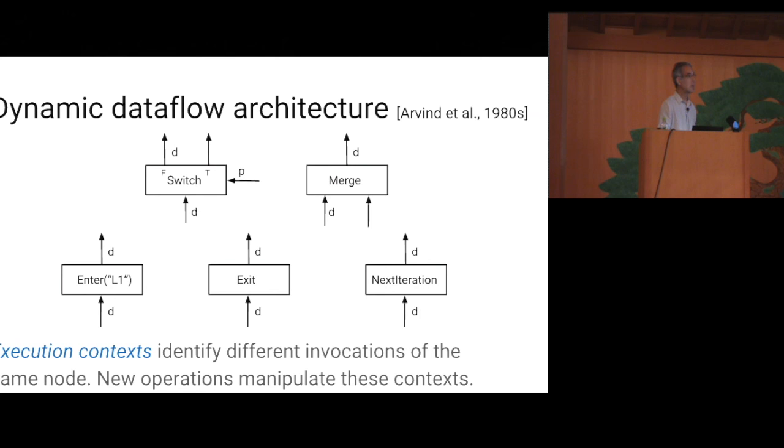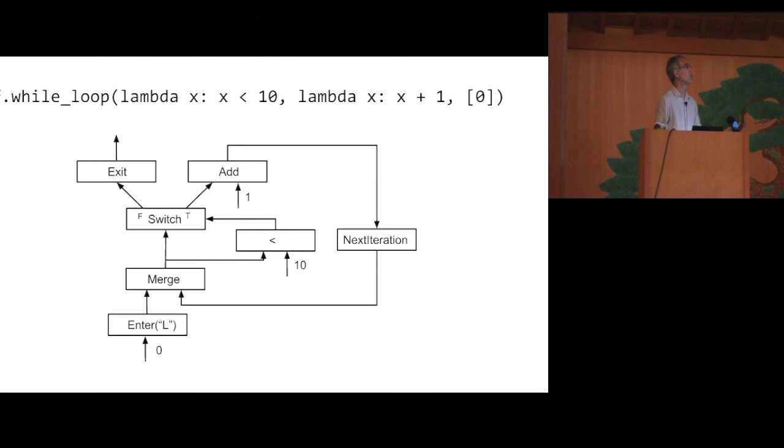The nodes for iteration are a little bit more complicated, they're based on the notion of execution context, which is a way of identifying different invocations of the same node. And the operations for control flow are ways of manipulating this context, entering loops, exiting loops, and going to the next iteration. For example, suppose that we have a while loop that starts with an input 0, and increments it by 1, until the input reaches 10. It's represented by this little graph, we enter the loop through an enter node. L is a name for the loop, it's just a string label. We exit through the exit node at the top, and every time around the loop we go through a merge and switch that deal with the conditional structure of the loop, and we go through an exit iteration to increment the iteration count. Note that this is a purely functional loop, we're just iterating, we're not updating any bit of shared state.